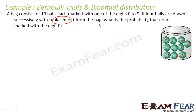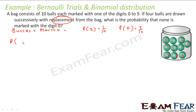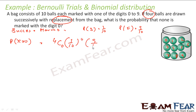Let us assume that success is marked with 0. So my probability of success will become 1 by 10, because one of the balls is marked with 0, and probability of failure is 9 by 10. We have to find the probability that not even a single ball is marked with 0, that is P(x = 0). n is 4, so this is 4C0 × (1/10)^0 × (9/10)^4, which comes out to be (9/10)^4. That is the answer.